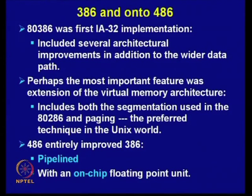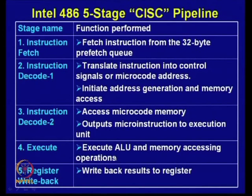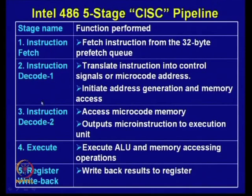Regarding pipelining: the Intel 486 used instruction pipelining for the first time in Intel processors, and it had 5 stages: instruction fetch, instruction decode 1, instruction decode 2, execute, and register write back. The various functions performed in the different stages are: instruction fetch fetches instructions from the 32-bit prefetch queue, and instruction decode translates instructions into control signals or microcode addresses.